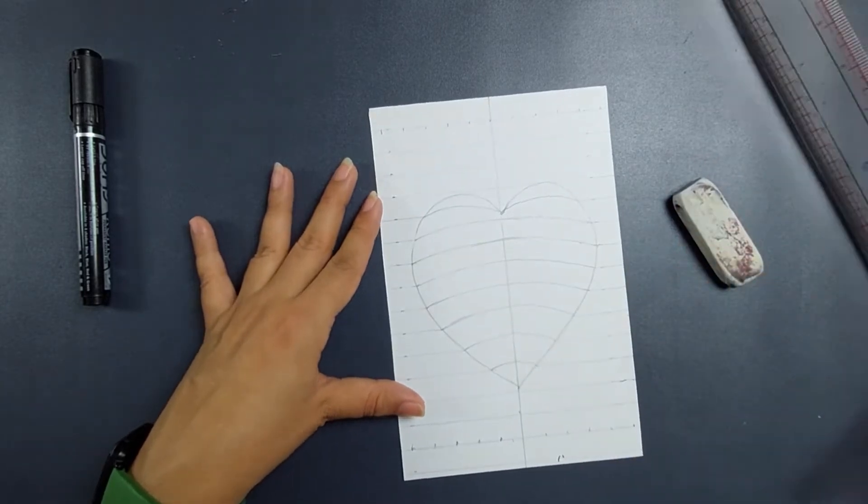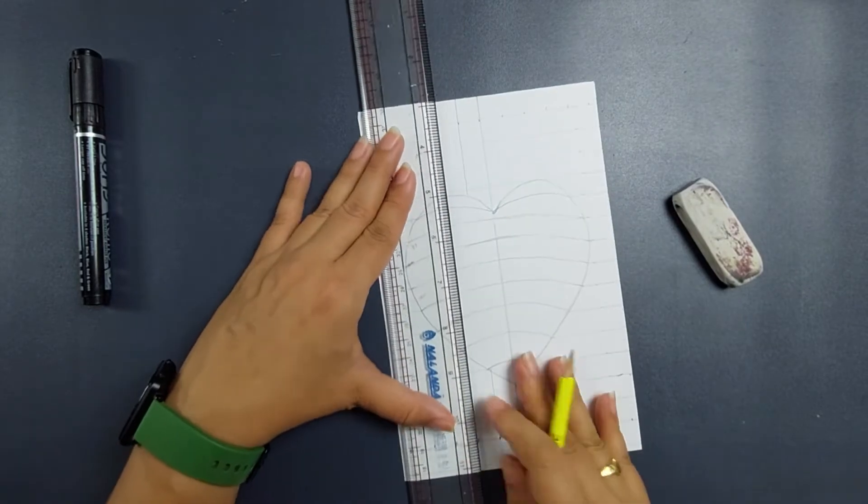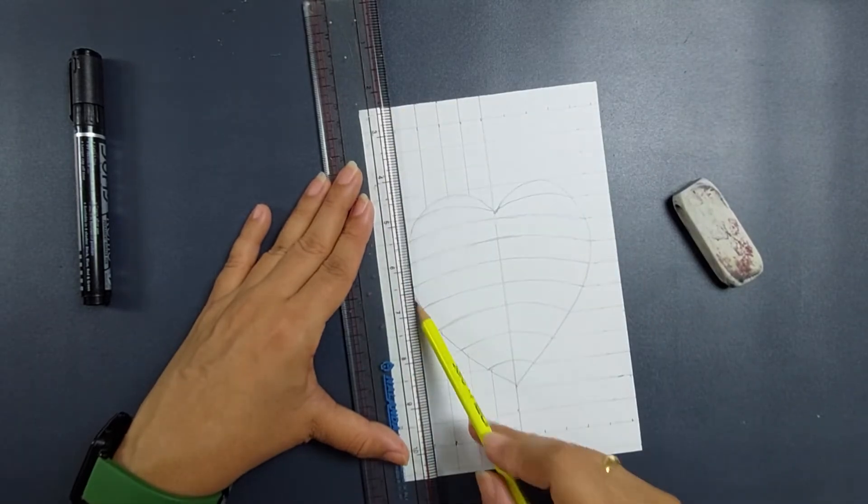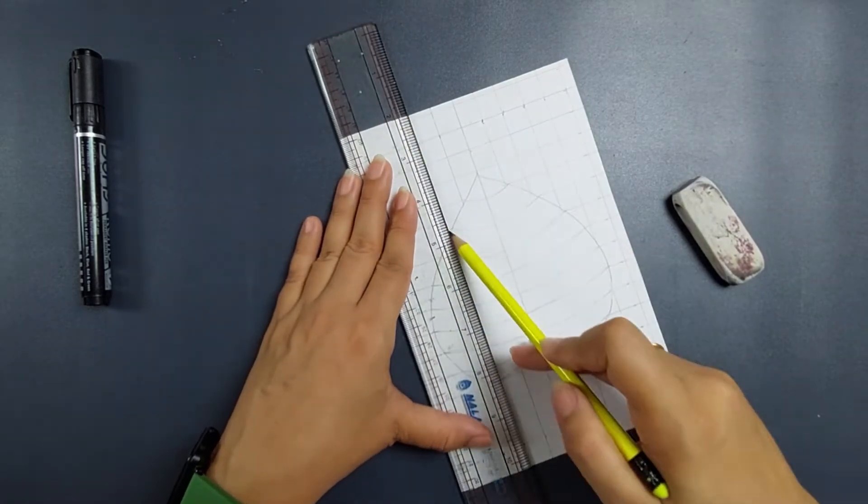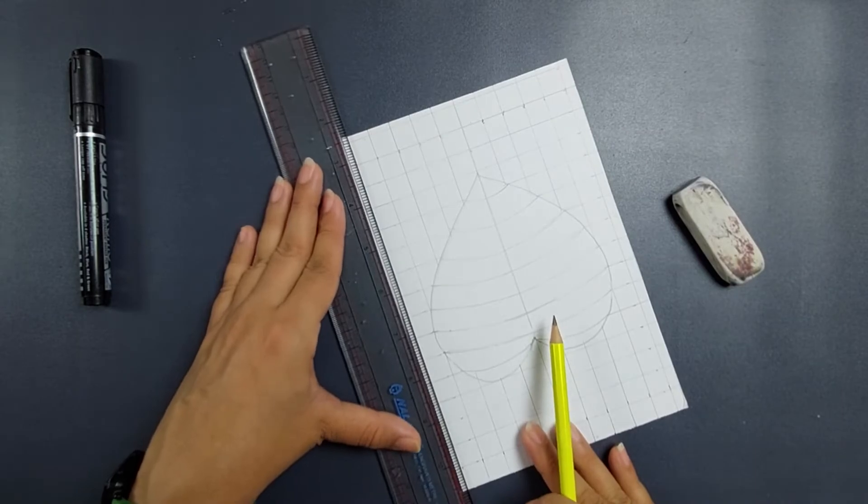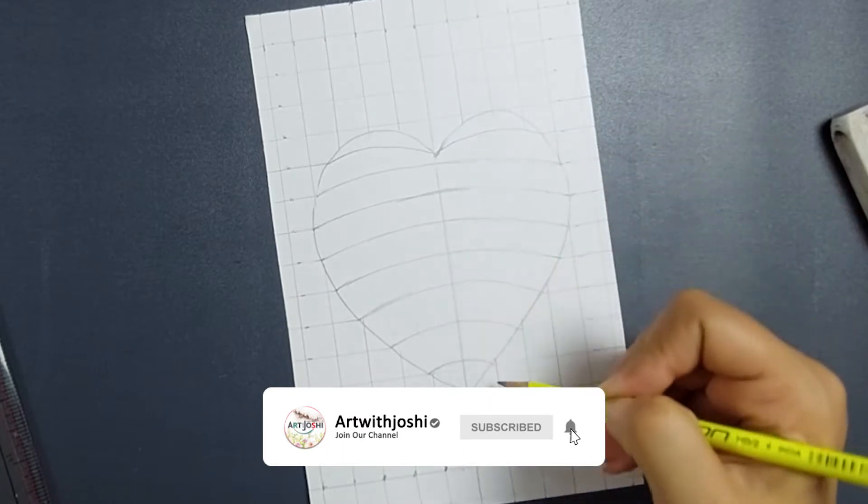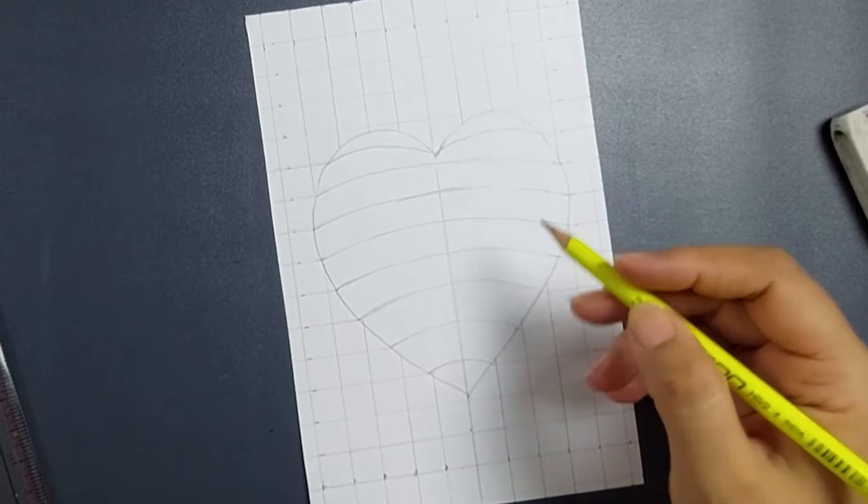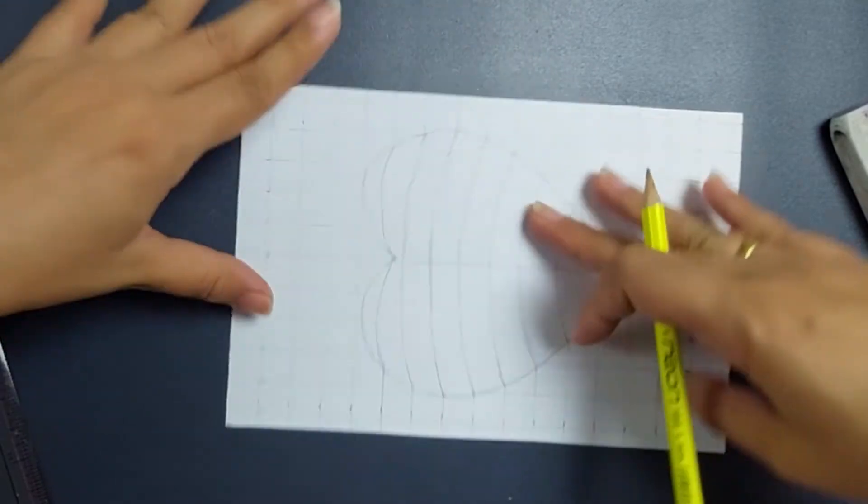Now we'll join these straight lines and we'll repeat the same step. Now we will again repeat this step with a little curve. We will not make straight lines, that is very important. The center line is straight but the rest have to be with a curve, so we'll join it with a curve.